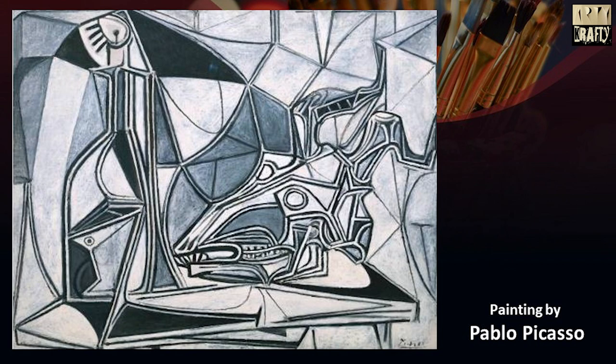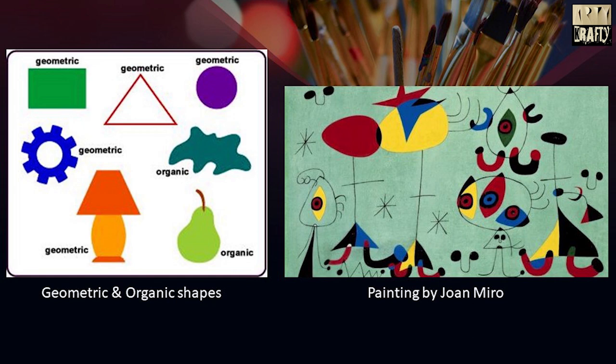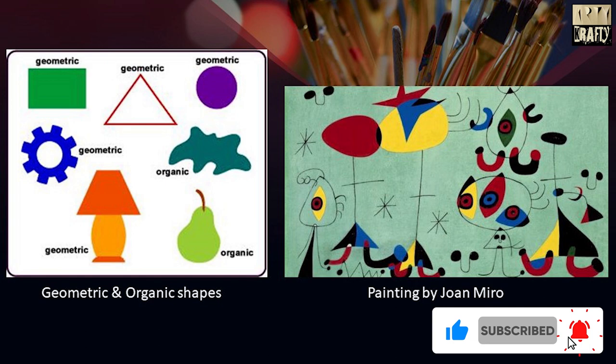Then comes shape. In the visual arts, shape is a flat enclosed area of an artwork created through lines, textures, colors or an area enclosed by other shapes such as triangles, circles and squares. There are two types of shapes: one is geometrical and the other is organic shape. This is the painting done by Joan Miró. It is totally based on various geometrical and organic shapes.